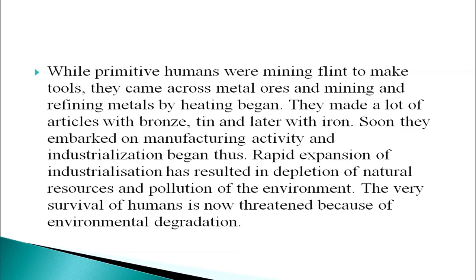Around 12,000 years ago, humans learned to grow their food and then began to sell the surplus to others. Surplus crops were transported to other places and for transportation, they discovered the wheel. Transportation became easier. Humans moved to newer places to raise new crops and also began to domesticate animals. While primitive humans were mining flint to make tools, they came across metal ores and mining and refining metals by heating began. They made a lot of articles with bronze, tin and later with iron. Soon they embarked on manufacturing activity and industrialization began. Rapid expansion of industrialization has resulted in depletion of natural resources and pollution of the environment.